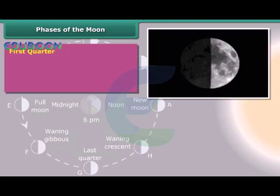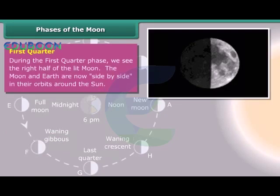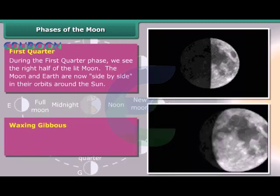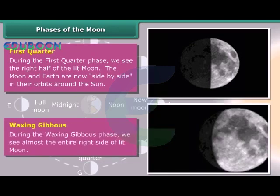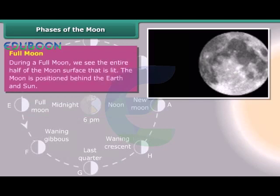First Quarter: During the first quarter phase, we see the right half of the lit Moon. The Moon and Earth are now side by side in their orbits around the Sun. Waxing Gibbous: During the waxing gibbous phase, we see almost the entire right side of the lit Moon. Full Moon: During a full Moon, we see the entire half of the Moon's surface that is lit. The Moon is positioned behind the Earth and the Sun.